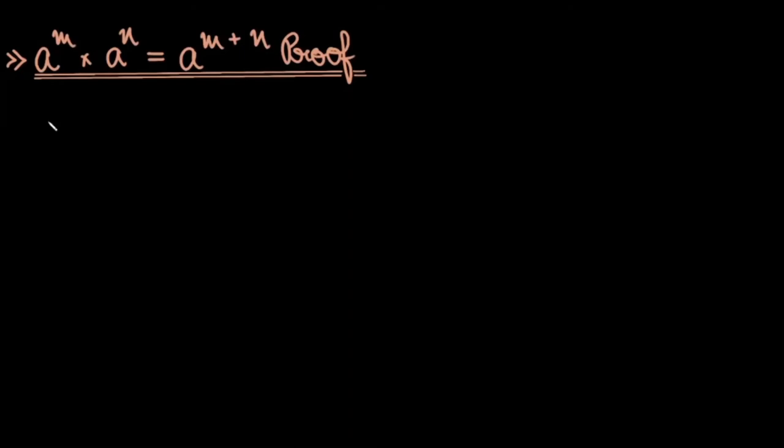The first law of exponents states that when you multiply two numbers that have the same base, the resultant will have the same base, yet their powers will be added. As you can see on the screen, the first law states that a to the power m multiplied by another number with the same base but a different exponent — the exponents get added. When you multiply them, the result has the same base and the exponents get added.